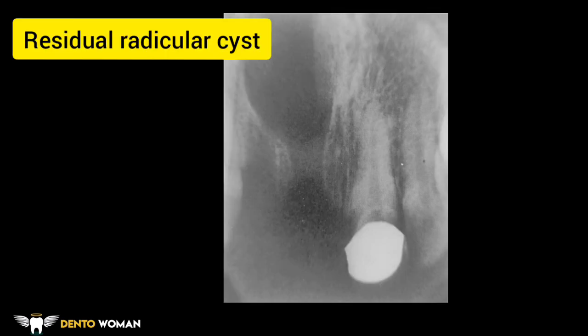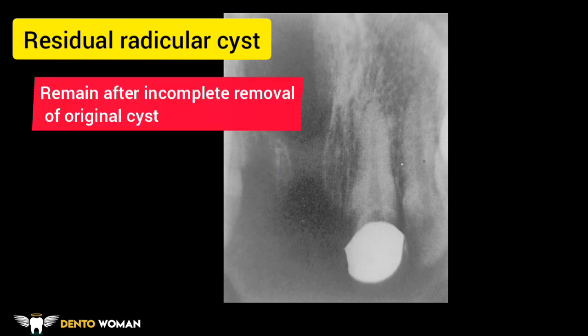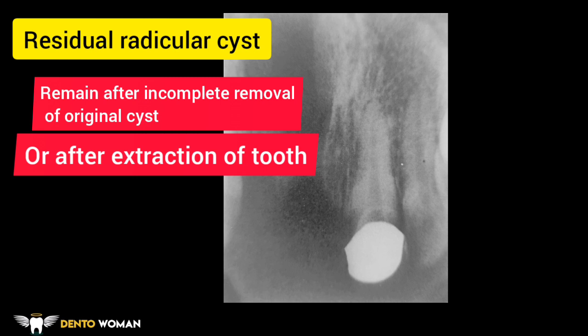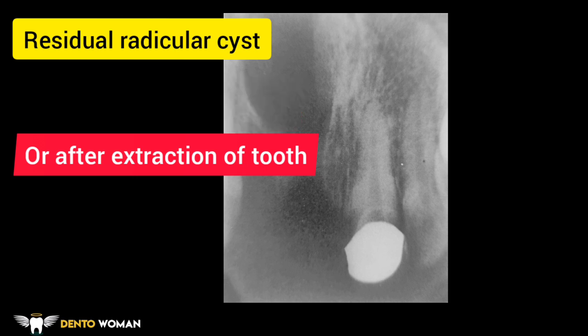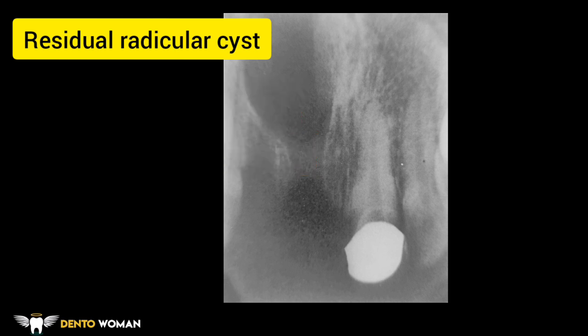Here is the residual radicular cyst: a well-defined circular radiolucency with a sclerotic border is seen in relation to missing teeth 11 and 12, extending from their sockets posteriorly. The residual cyst is one that remains after incomplete removal of the original cyst, or one that has remained after the associated tooth was extracted, or formed from residual epithelial cell rests from the periodontal ligament of the lost tooth.